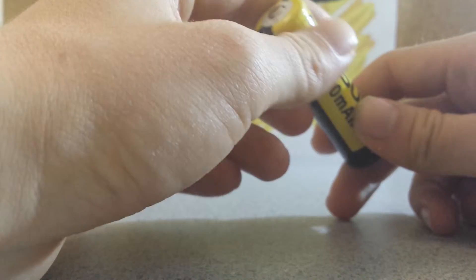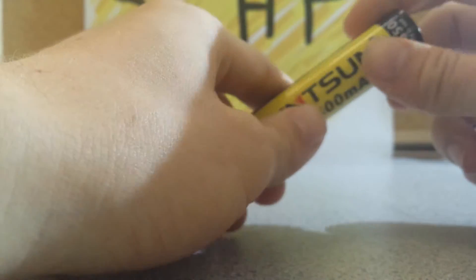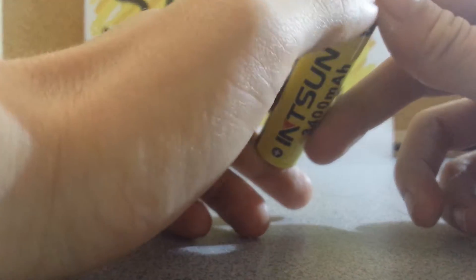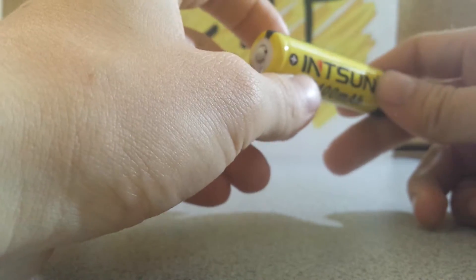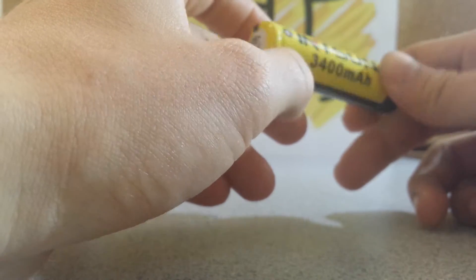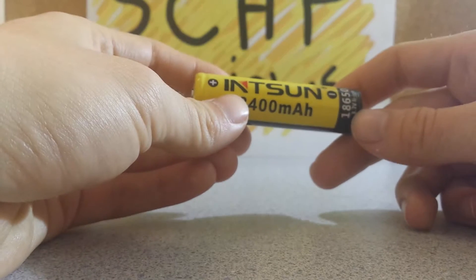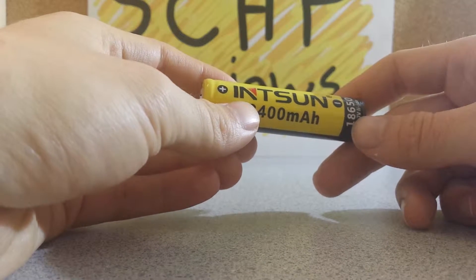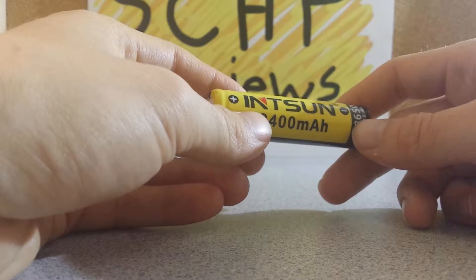These even come with a PCB, which is a protection circuit module, a board. It basically protects the battery from overcharging, over-discharging, and over-drain. That, for me, is very essential, because I like to make sure that my products never get destroyed.